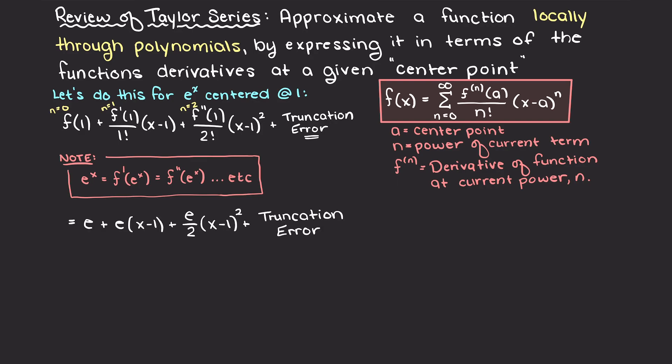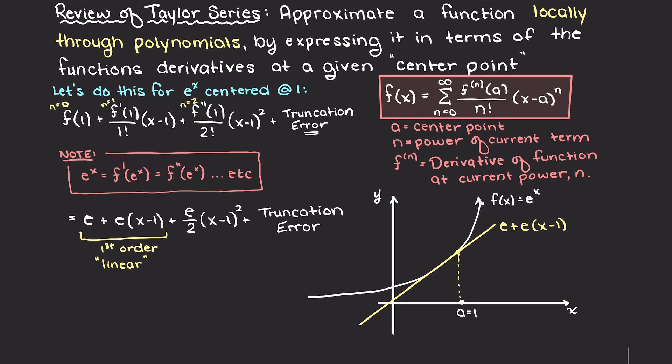Simplifying our Taylor series, we get the following equation. Let's plot our actual e to the x function, and then the first and second order Taylor series approximations at a center point of 1. The first order expansion will just be the first two terms here, and this is simply a straight line.